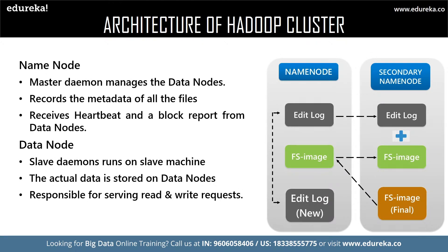The Name Node is responsible for running master daemons. It is designed to store the metadata — meaning the information about the actual data, or the schema of the data. The Name Node is the first to encounter a client's request for data, then transfers the request to the Data Nodes which store the actual data. The Name Node manages the health of all the Data Nodes by receiving a heartbeat from each at a particular interval. If any Data Node fails to respond with a heartbeat, the Name Node considers it dead and reassigns the task to the next Data Node.